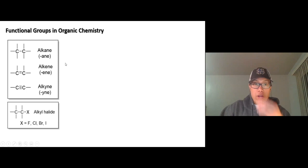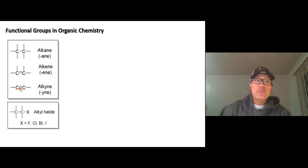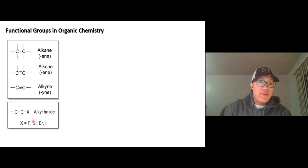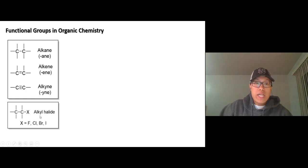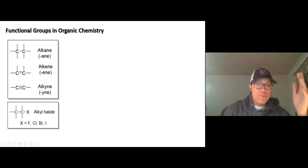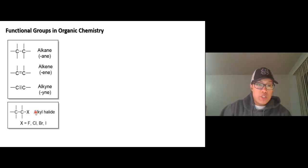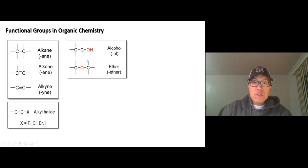Let's review what we've seen so far. We have alkane — single bond; alkene — double bond; alkyne — at least one triple bond. And our halide: fluorine, chlorine, bromine, iodine — that's Group 7. Our R group is basically a carbon chain — one carbon, three carbons, ten carbons, straight chain or branching — we call that an alkyl group. So R-halide is a carbon chain with a Group 7 element.